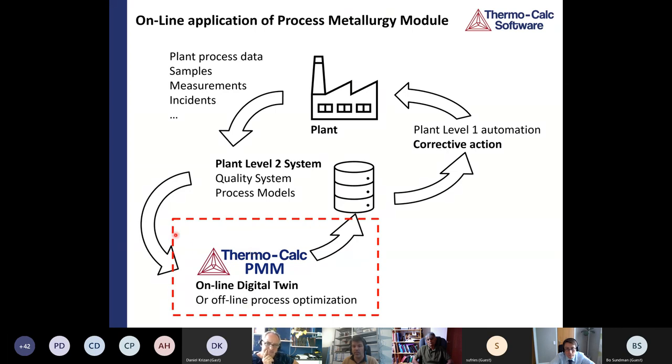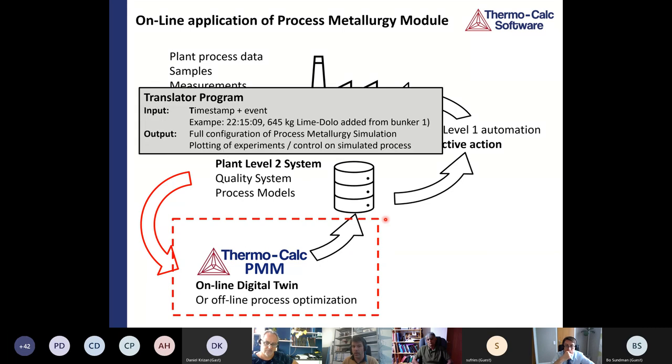But we believe there is a huge amount of added value in not artificial intelligence, but real physical model where you take into account physical models and CALFAD type databases to understand your process better. This is what we're working on. We call it a digital twin of the steel plant process. What we do here is we take plant level two data directly and then feed it into the process metallurgy module. That will give you, basically, will tell you what the steel plant's doing.